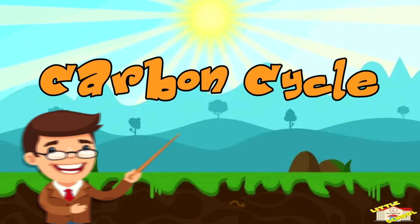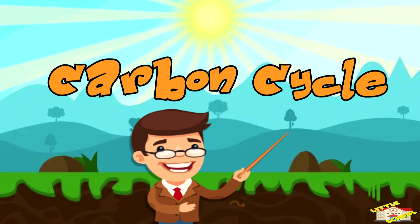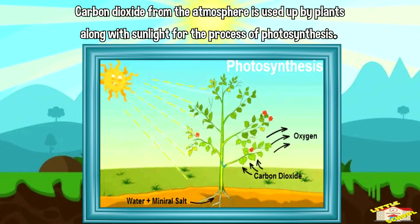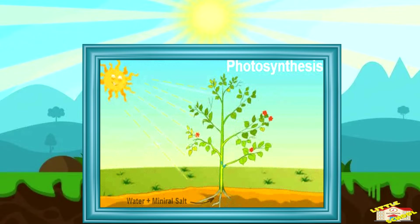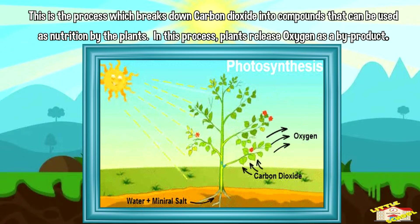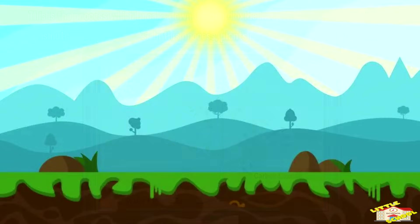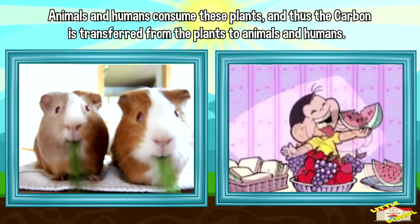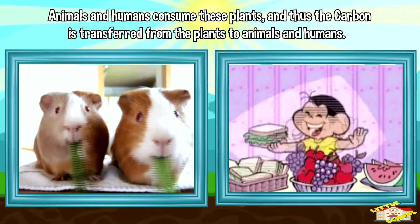Here is how the carbon cycle works. Carbon dioxide from the atmosphere is used by plants, along with sunlight, for the process of photosynthesis. This is the process which breaks down carbon dioxide into compounds that can be used as nutrition by the plants. In this process, plants release oxygen as a by-product.